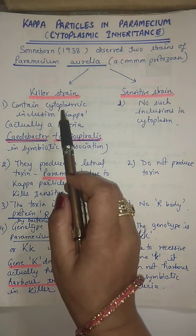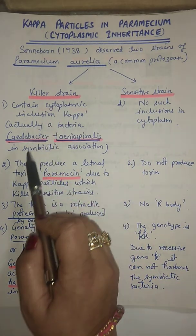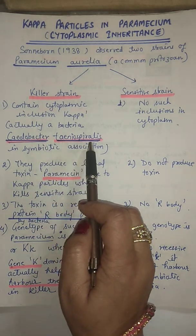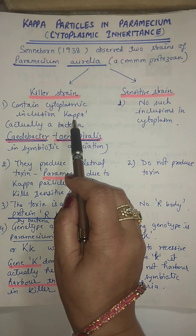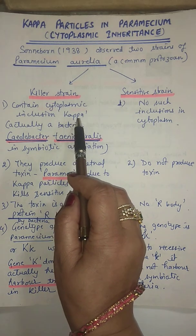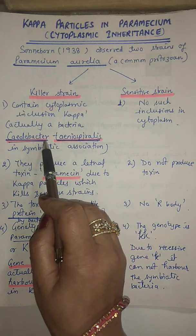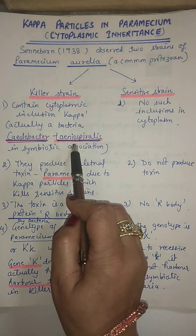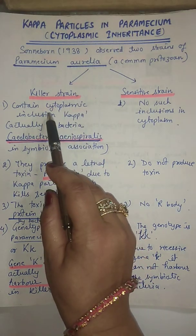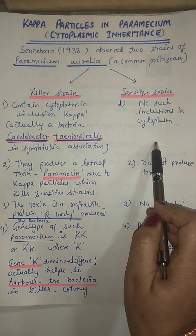He found that these killer strains actually harbor endosymbiotic bacteria, Pseudobacter teniospirellis, denoted as kappa particles. This term kappa is used for the endosymbiotic bacteria living in the cytoplasm of Paramecium aurelia in the killer strain. These kappa particles were absent in the sensitive strain.